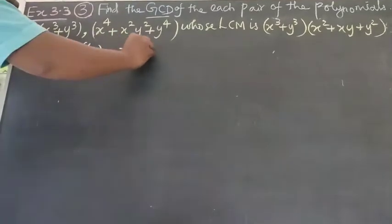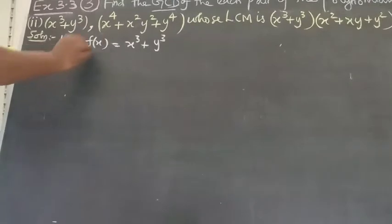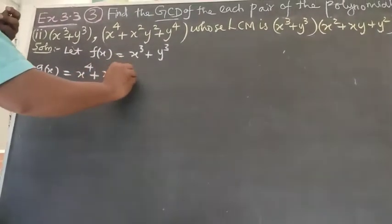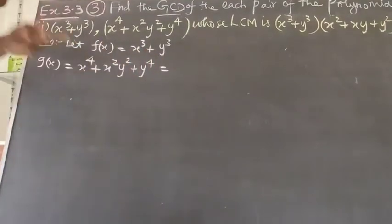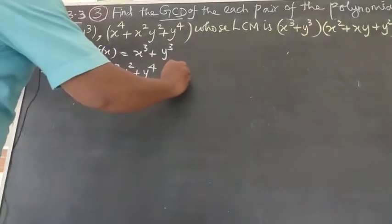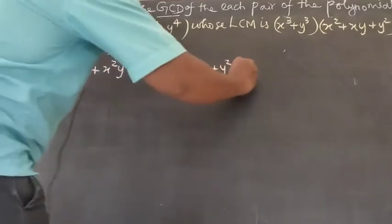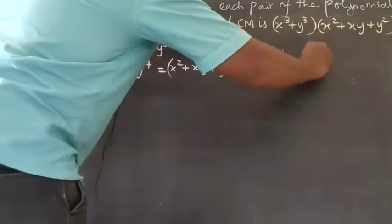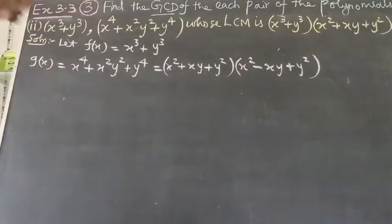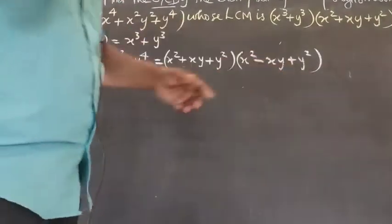F of X is equal to X cube plus Y cube. G of X is the second polynomial: X power 4 plus X squared times Y squared plus Y power 4. Now, G(x) can be factored using the formula: X square plus XY plus Y squared times X square minus XY plus Y squared.